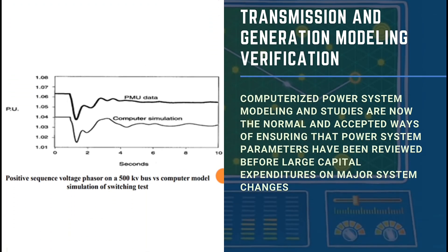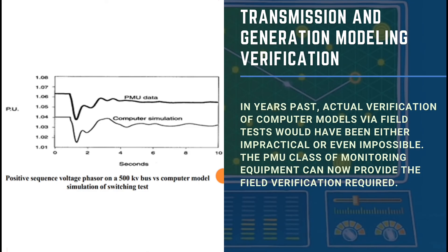Transmission and generation modeling verification: Computerized power system modeling and studies are now the normal and accepted ways of ensuring that power system parameters have been reviewed before large capital expenditures on major system changes. In years past, actual verification of computer models via field tests would have been either impractical or even impossible. The PMU class of monitoring equipment can now provide the field verification required. The shown figure compares a remote substation 500 kV bus voltage captured by the PMU to the stability program results.